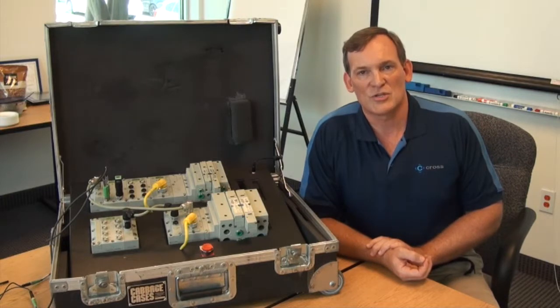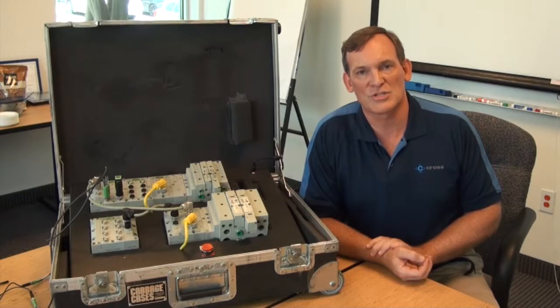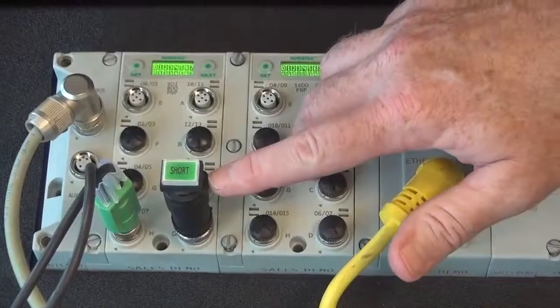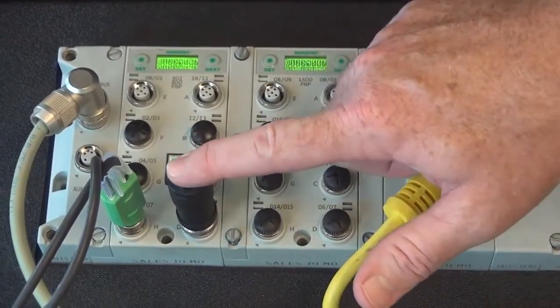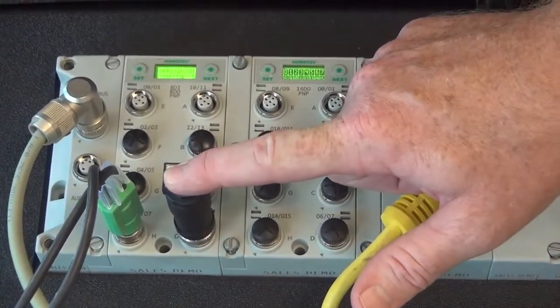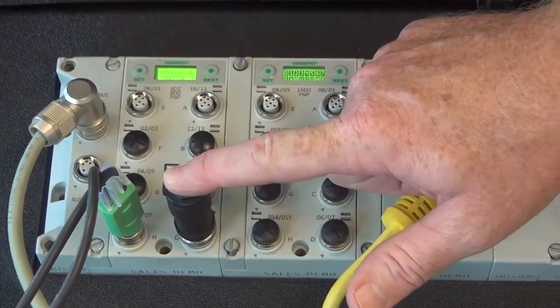The graphical displays on the communication node and I.O. modules serve another purpose. Each shows the status of the module at all times. Should a fault occur, the display indicates the type of fault detected and its location. The display also blinks until the fault is cleared.